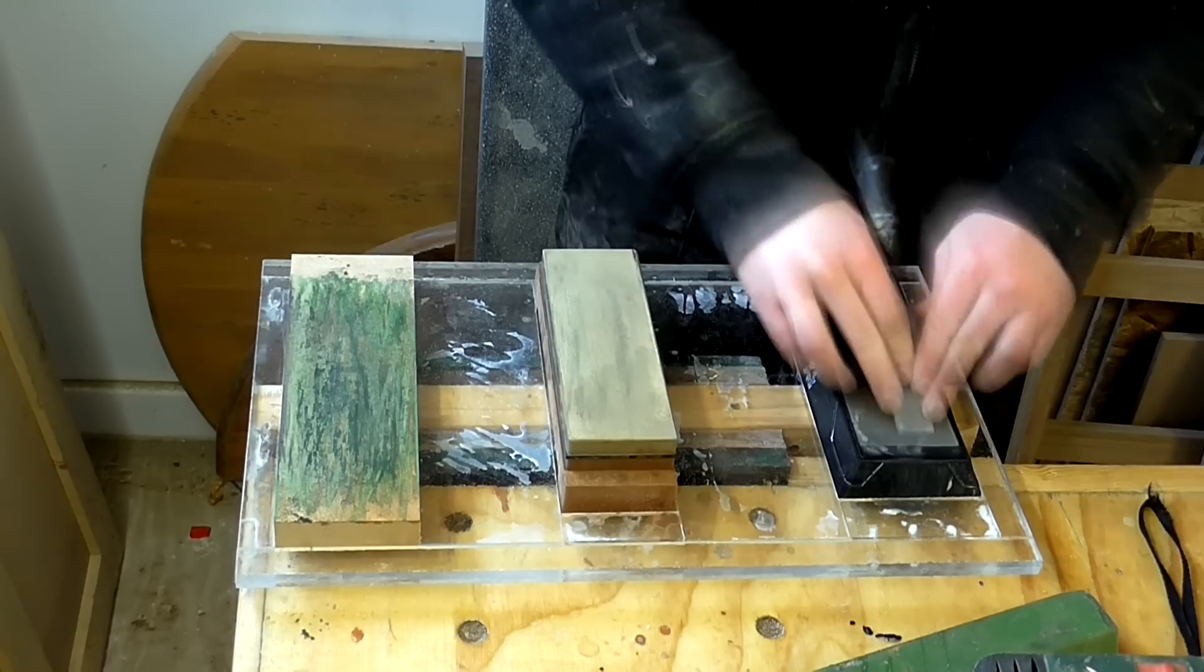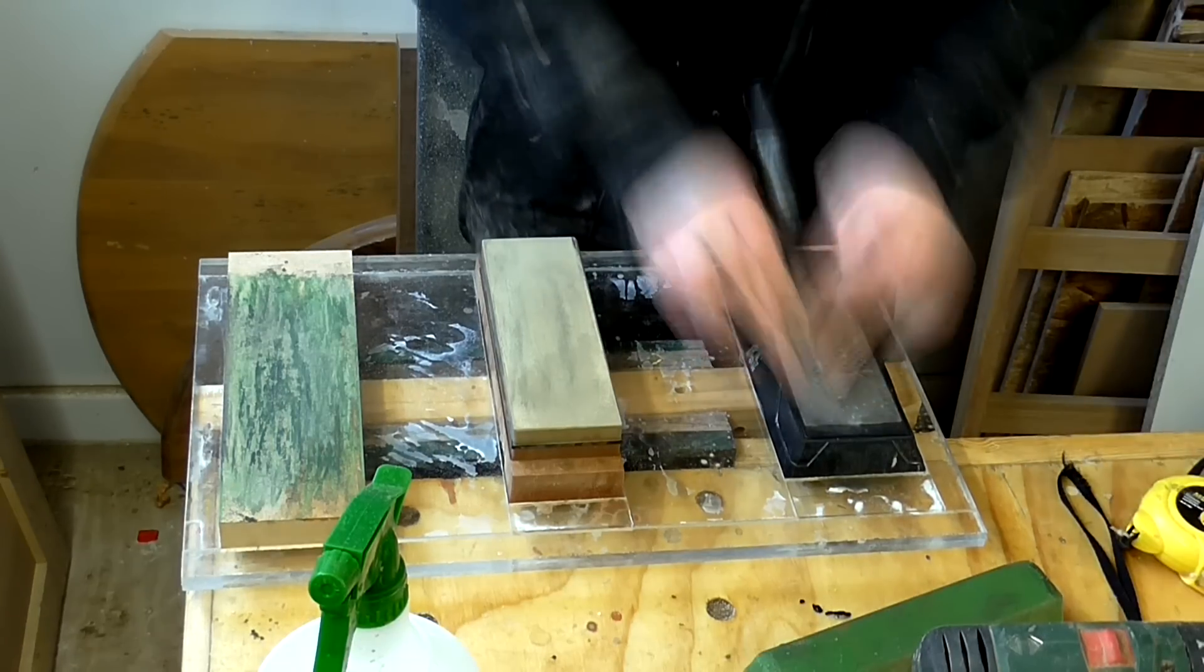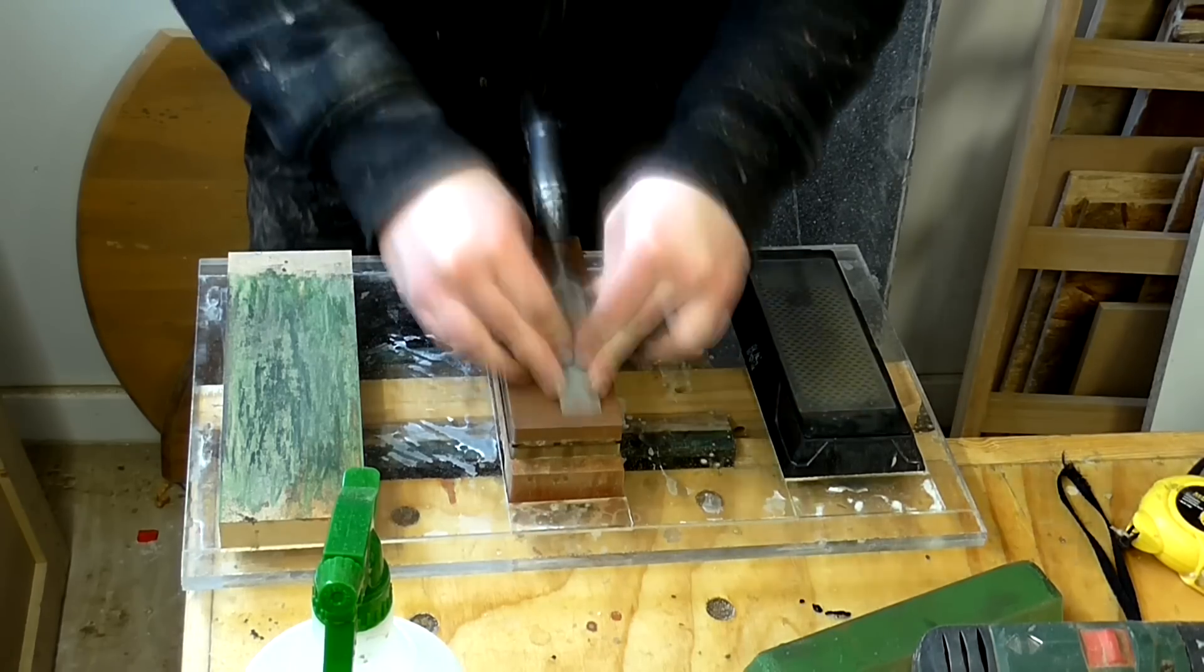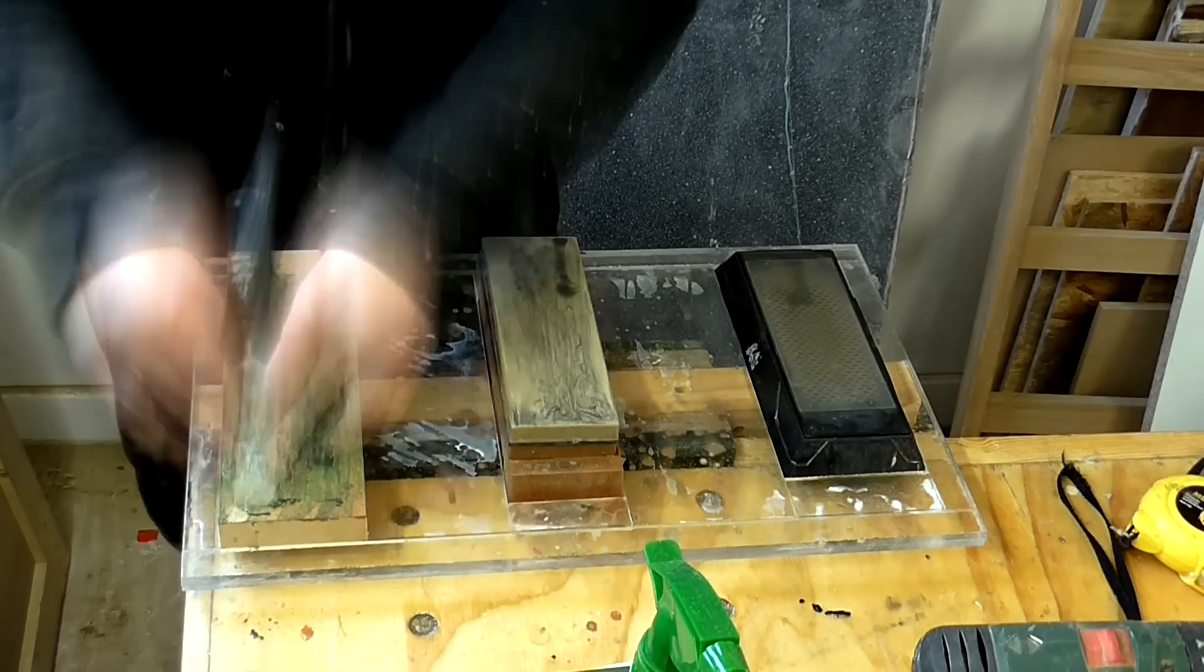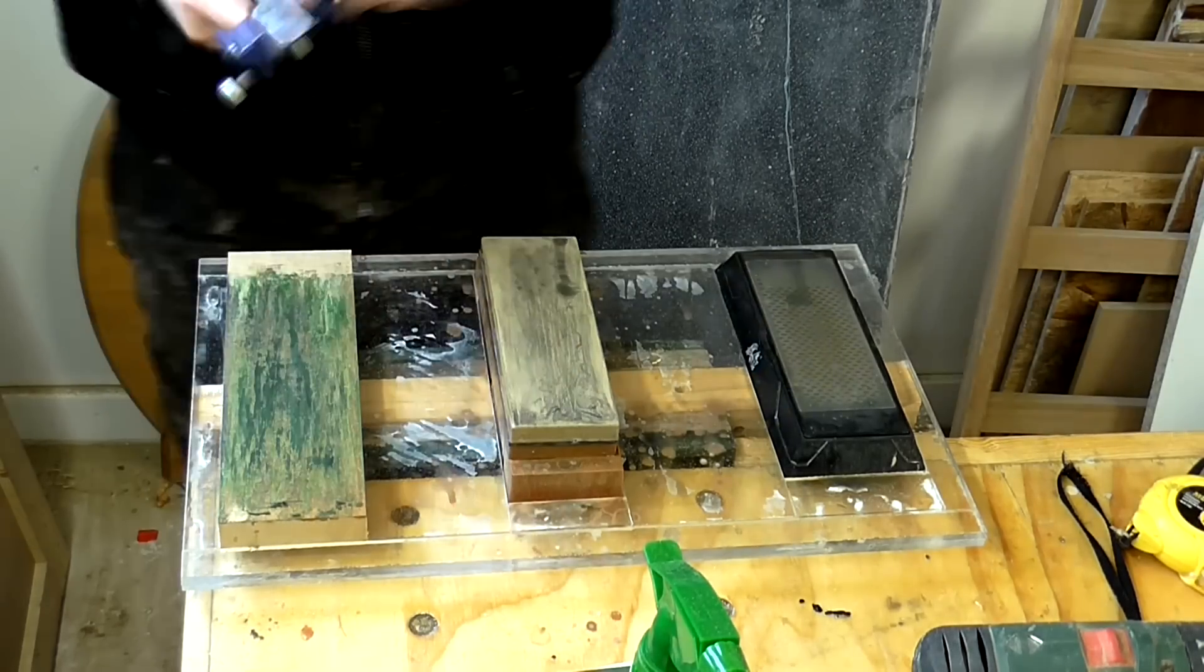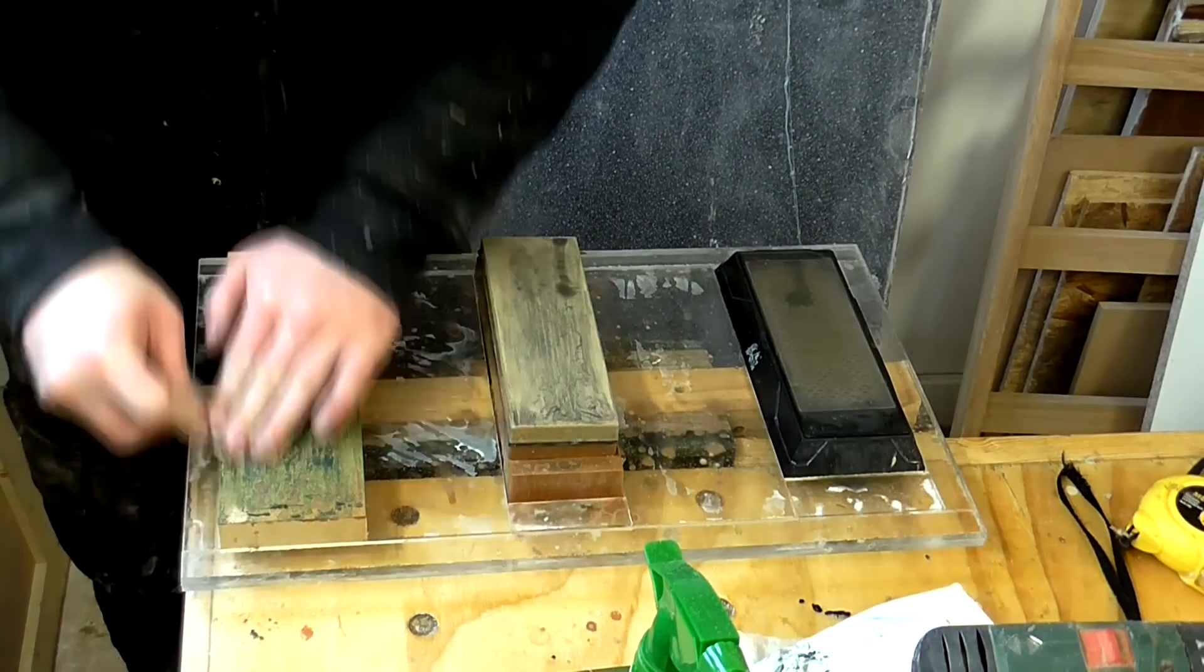Then I use my honing guide with the chisel set at about a 30 degree angle and I repeat the process on the cutting edge of the chisel until I can feel a burr along the width of the cutting edge. And finally I remove the burr from the back of the blade on the piece of MDF with one stroke.